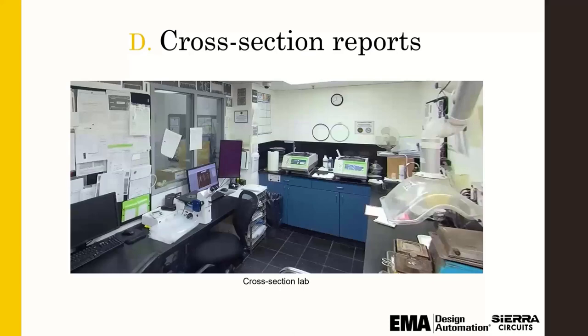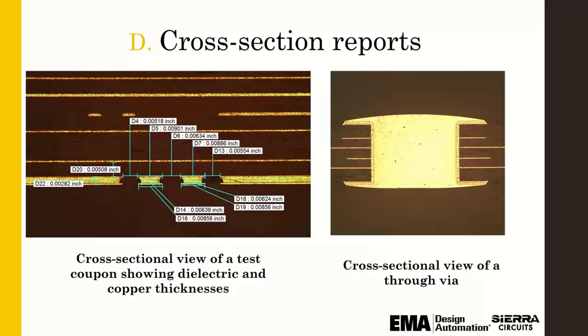Please definitely get in touch with your fabricator if you need help reading the cross-section report. Here are some quick examples of measurements you can get. Looking at this, it's probably a hard gold surface finish — you have a little bit of an overhang, which is to be expected within certain parameters. You can see the traces are trapezoidal, and you can check how this equals the model you started with. Controlled impedance is definitely an iterative process, and you should rely on your fabricator to help through that iteration — sharing results, tweaking edge comp, or tweaking dielectric materials or glass styles.